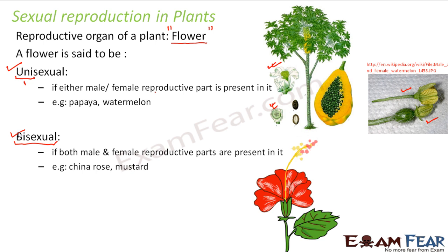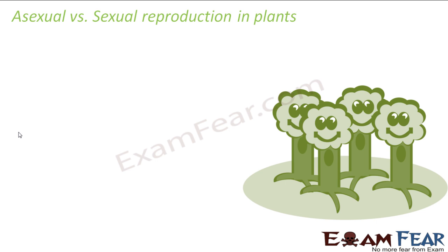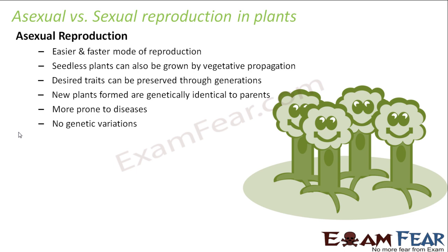Before we try to understand how sexual reproduction takes place in plants, it is quite worthwhile to know the advantages of sexual reproduction over asexual mode in plants. Since plants can reproduce both asexually and sexually, are there any advantages of one over the other? Both of them have their own advantages and disadvantages. Let us have a quick look at some of the advantages and disadvantages of asexual reproduction.